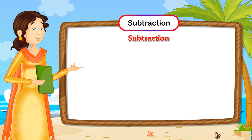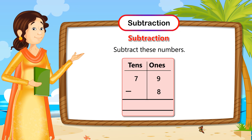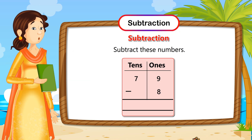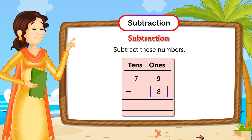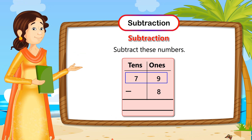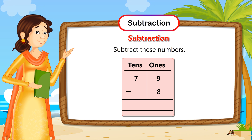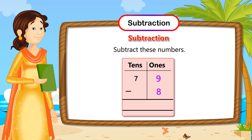Subtraction. Let's subtract a 2-digit number and a 1-digit number. First, we need to subtract 8 from 79. As we know, we start subtraction from the right side, or the 1s column.